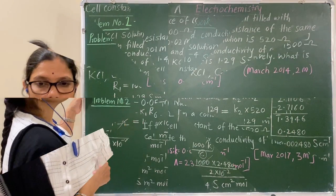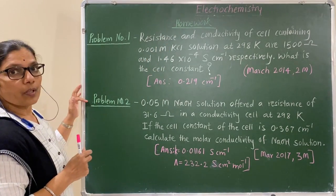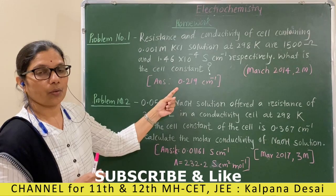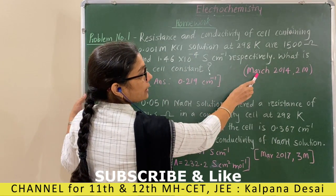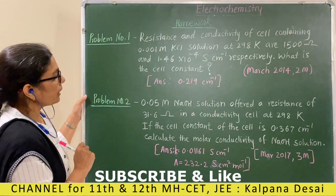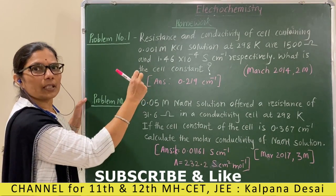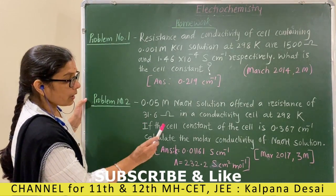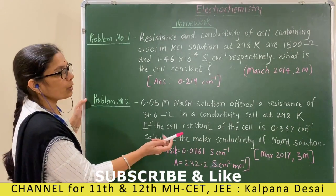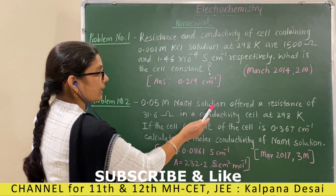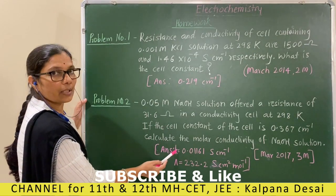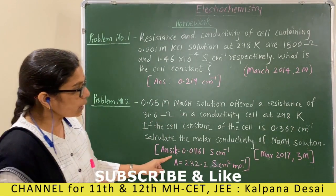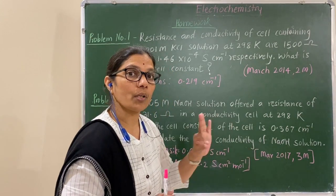Now for homework, two numericals are given. First problem: resistance and conductivity are given; find the cell constant. This was asked in March 2014 for two marks. Mark distribution: formula half mark, substitution half mark, answer with unit half mark. Second problem: cell constant and resistance are known; find conductivity, then from that find molar conductivity. Concentration is also known. This was asked in March 2017 for three marks.